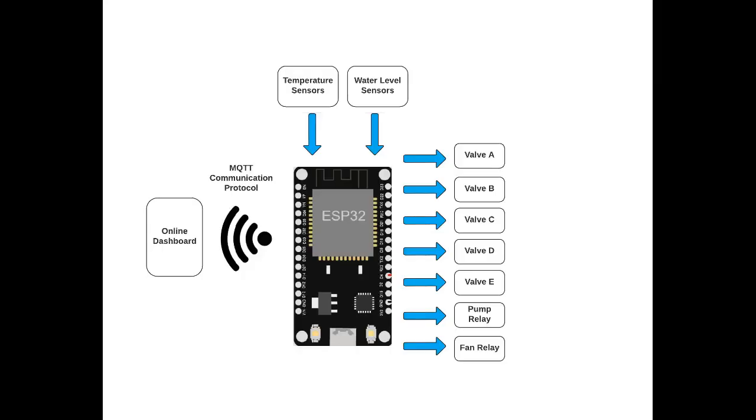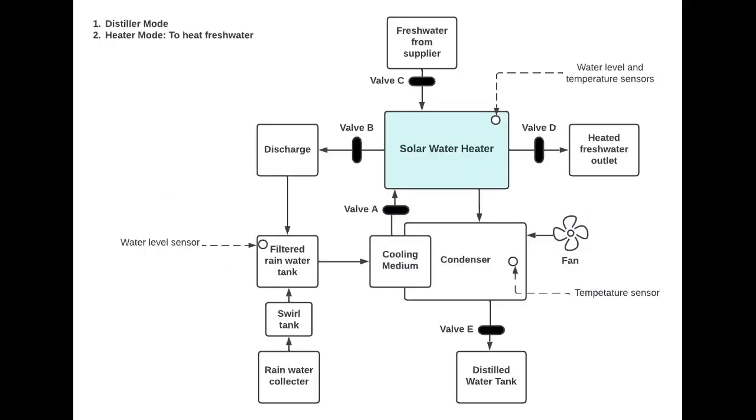We needed a way to control the water flow and the functions of the solar water heater. We use an ESP32 as the brain of the system where all the valves, sensors and relays are connected to it. The solar water heater is in the distiller mode. These valves are closed and the pump is turned on every 15-20 minutes. The rainwater in the tank now acts as a cooling medium to condense the water vapor to a liquid state. After condensation, this valve is opened to collect it in the tank.